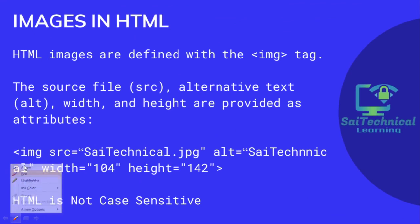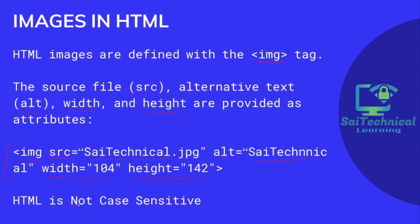HTML images are defined with the img tag and attributes: src for the source file, alt for alternative text, and width and height. We declare an image with the img tag followed by src pointing to the image file (e.g., sci-technical.jpg). If the image is not available, the alt text 'sci-technical' will be printed instead. HTML is not case sensitive, so we can use uppercase or lowercase for HTML elements.